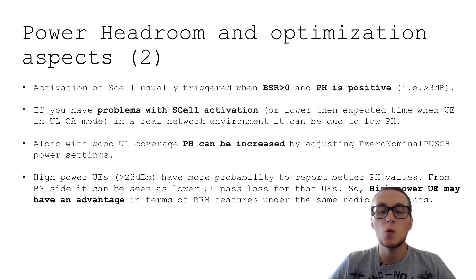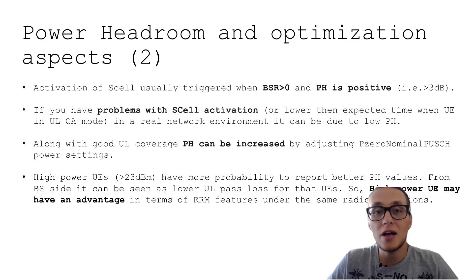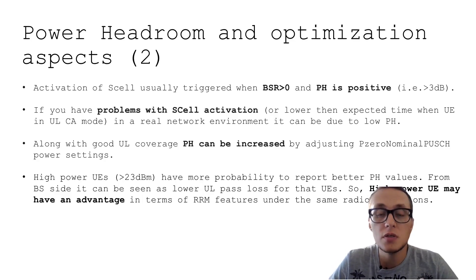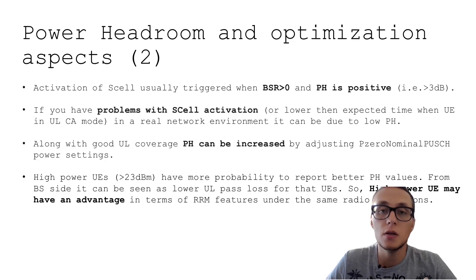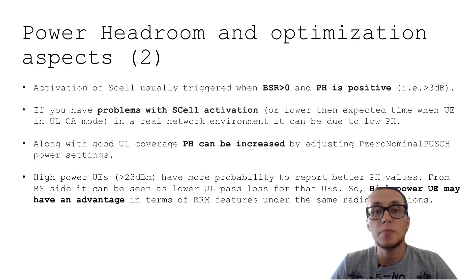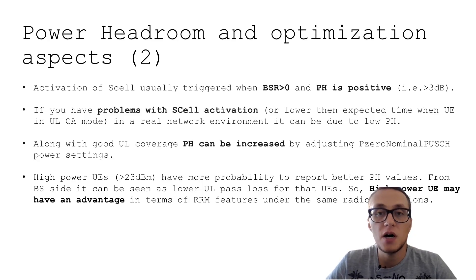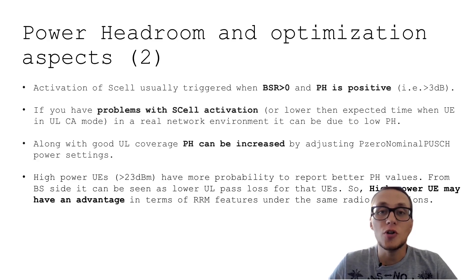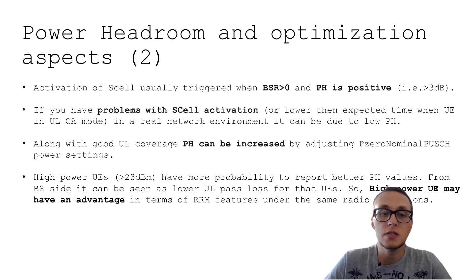If you have problems in a real network with secondary cell activation — for example, very little time spent in carrier aggregation mode — you should think about uplink coverage problems. You may consider adjusting the p0 nominal PUSCH configuration, because the p0 nominal PUSCH value plays a role in the power headroom equation. Of course, this should be done very cautiously since it may affect multiple features in a negative way.